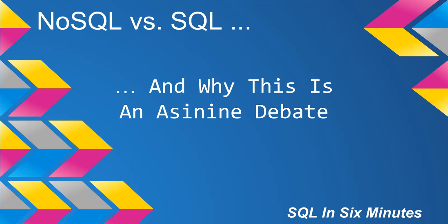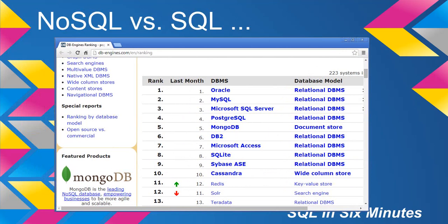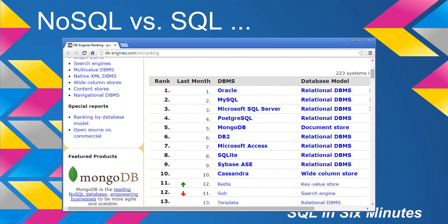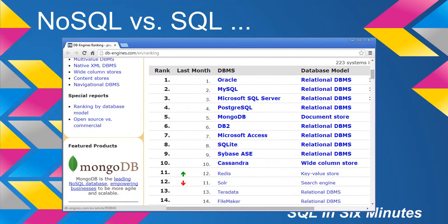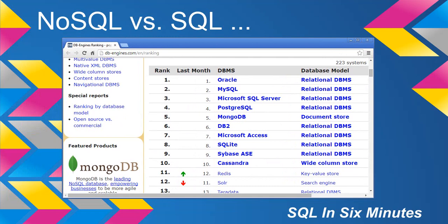For the record, I'm getting this information from the DB-Engines popularity poll. I don't know how accurate it is — the ranking goes by what they mine off the internet. Microsoft SQL Server is supposedly number three and MongoDB is number five.